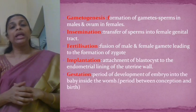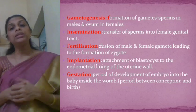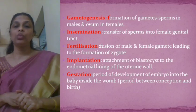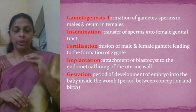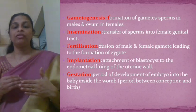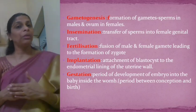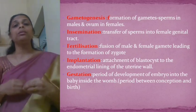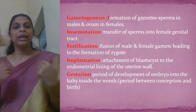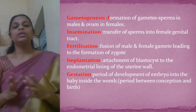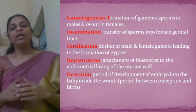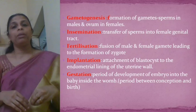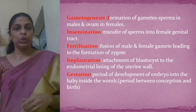The next event is gestation. Gestation is the period between conception and birth. Conception means the time when fusion of the male and female gamete takes place within the female reproductive system. The period of development of the embryo into the baby inside the womb — the uterus of the mother — is called gestation.